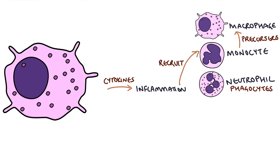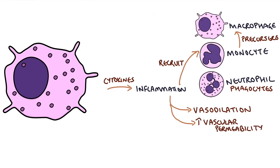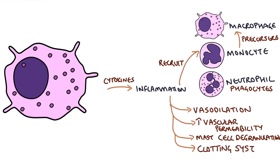The inflammatory response also involves a number of other processes that help to contain and fight the infection. These are vasodilation, increased vascular permeability, mast cell activation and degranulation releasing more cytokines that further stimulate the inflammatory response, activation of the clotting system, and activation of the kinin system.